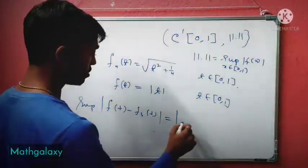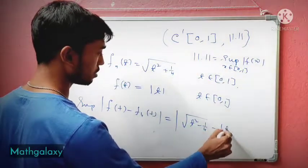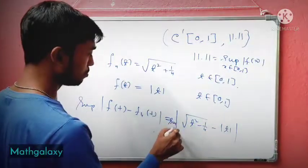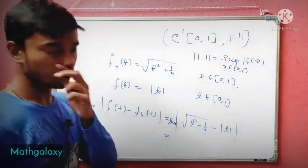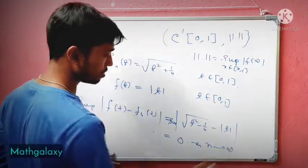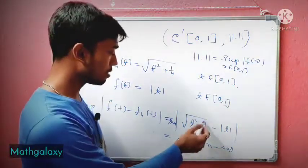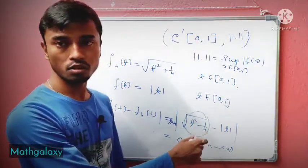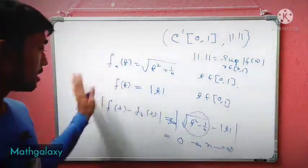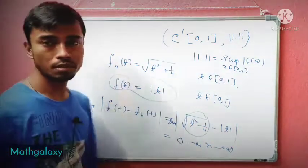If we take the sup norm of (f(t) − fₙ(t)), this is the supremum of |√(t² + 1/n) − |t||, and this supremum goes to zero as n tends to infinity. So fₙ converges to f(t) = |t| under the supremum norm.